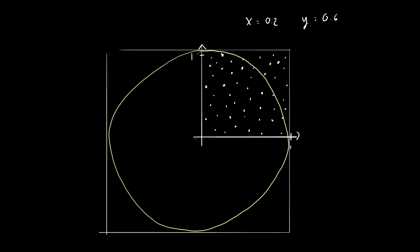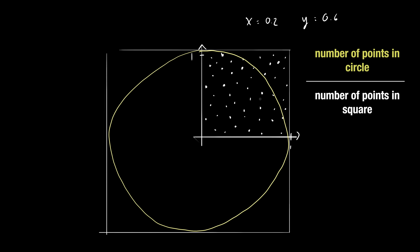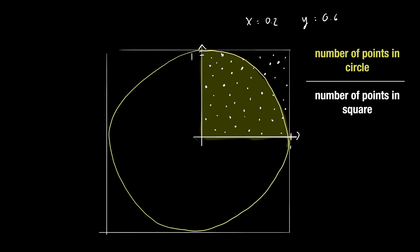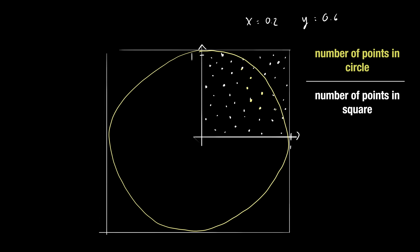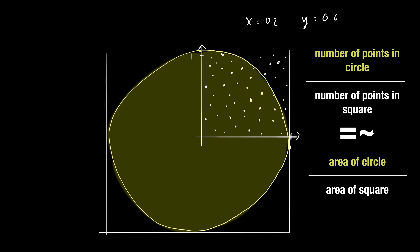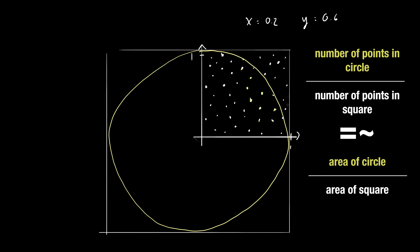So as you can see, the goal here is to count all the points in the circle and count all the points in the square. The ratio between these two numbers will be pretty close to the ratio between the total area of this circle and the total area of this square. So how do you know if the point is in the circle or not? It's pretty simple — you just take the distance between the point to the origin, and if it's smaller than one, then it's in the circle.